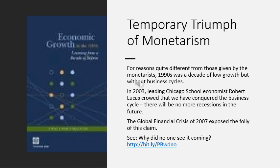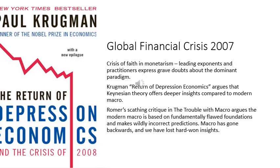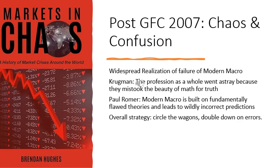This turned out to be premature. Just a few years later, the global financial crisis occurred, followed by the great recession. The global financial crisis led to a crisis of faith in mainstream economics, and many major economists published critiques of the dominant theories. Since then, there has been chaos and confusion in the world of theoretical economics. But the major strategy adopted has been to basically circle the wagons and double down on error, instead of trying to create fundamental changes in economics, as Keynes had done earlier. Economists have simply continued to espouse the same faulty theories which led to the global financial crisis.